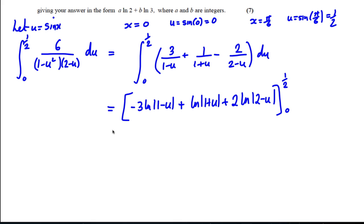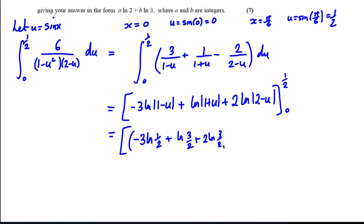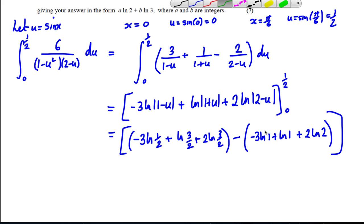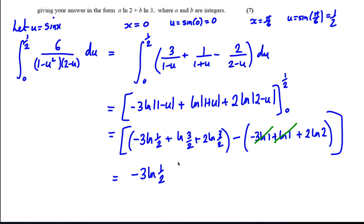Substituting u = 1/2: −3 ln(1/2) + ln(3/2) + 2 ln(3/2). Substituting u = 0: −3 ln 1 + ln 1 + 2 ln 2. Since ln 1 = 0, the u = 0 terms reduce to just 2 ln 2, which we subtract.